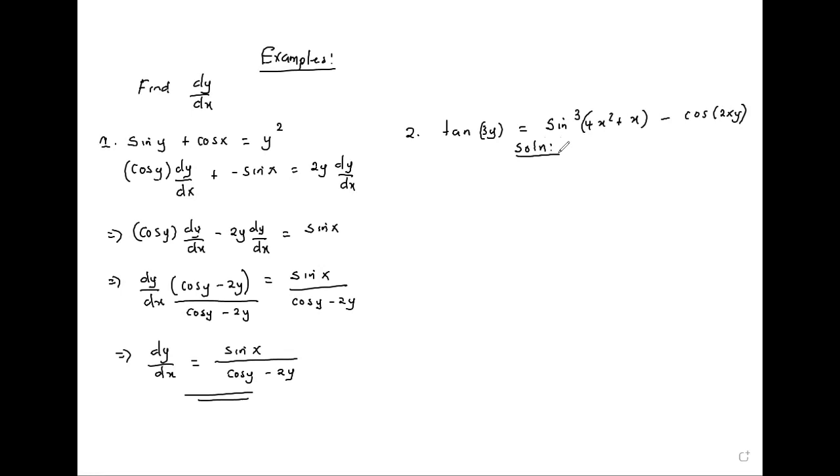First differentiate tan(3y), we get sec²(3y). Differentiate 3y, we get 3, then multiply by dy/dx because of the presence of y there. This is equal to: first drop the power 3, sine becomes squared 4x² + x, then differentiate sine, it will become cos(4x² + x). Differentiating 4x² + x gives 8x + 1.